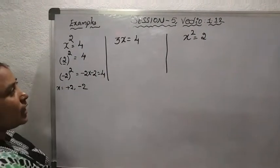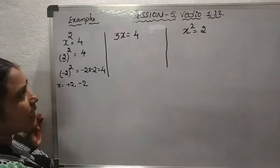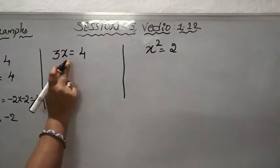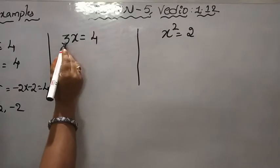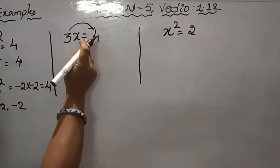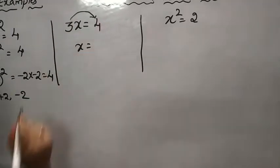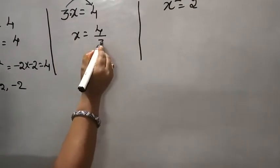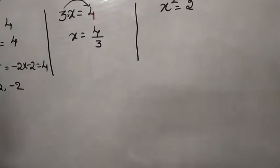From the second example, 3 times x is equal to 4. We find the x value by transposing 3 to the RHS side. Since it was multiplying on the left, it becomes dividing on the right. So x is equal to 4 by 3.